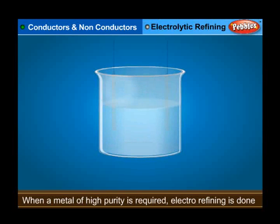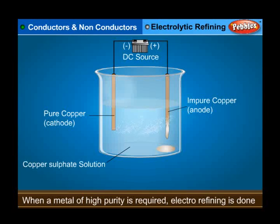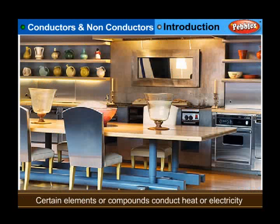Electrolytic refining: when a metal of high purity is required, electro refining is done. The impure metal is made as anode. A pure thin sheet of the same metal is made as cathode, and an aqueous solution of the metallic salt forms the electrolyte.